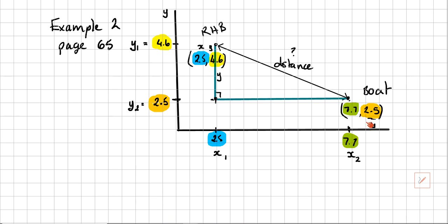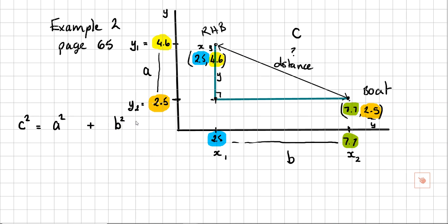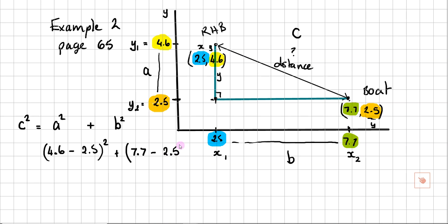Now for the actual maths of working out the lengths. Let's call this the A distance. Using Pythagoras's theorem: this is C, this is A, and this distance is B. So C squared equals A squared plus B squared. To work out A, you do 4.6 minus 2.5 and square that. Then B squared would be 7.7 minus 2.5, all squared.